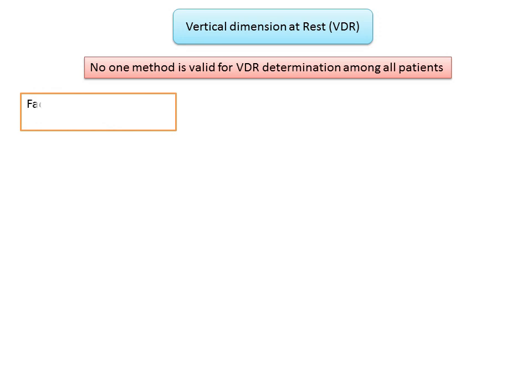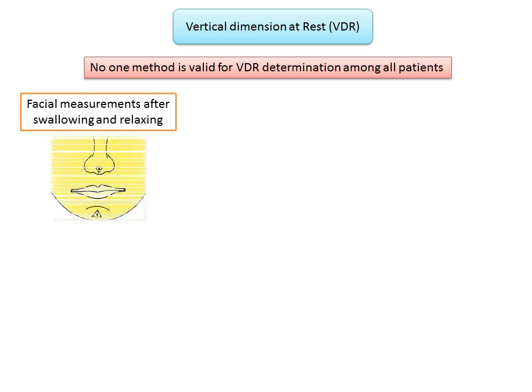The following methods can be used to measure the vertical dimension at rest. Facial measurements after swallowing and relaxing: the patient sits upright and relaxes. Two reference points are marked with the help of a triangular piece of adhesive tape on the tip of the nose and the tip of the chin. The patient is asked to perform functional movements like wetting the lips and swallowing, which brings the mandible to its physiological rest position. The distance between the two reference points is then measured.